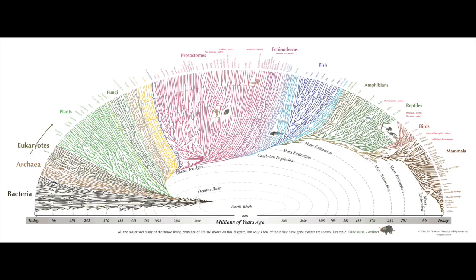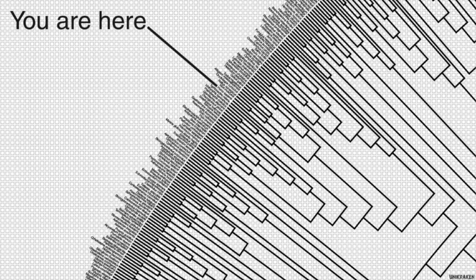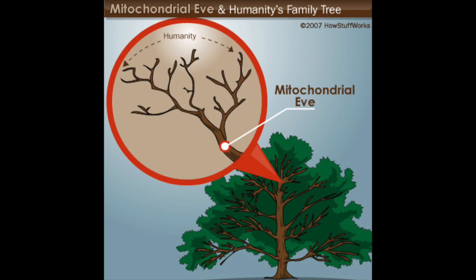This concept applies to the many species of organisms that exist throughout the Earth. There exists within each branch of the family tree another family tree exclusive to the specific species. In humanity's case, all of the different family bloodlines are branches of the human family tree.